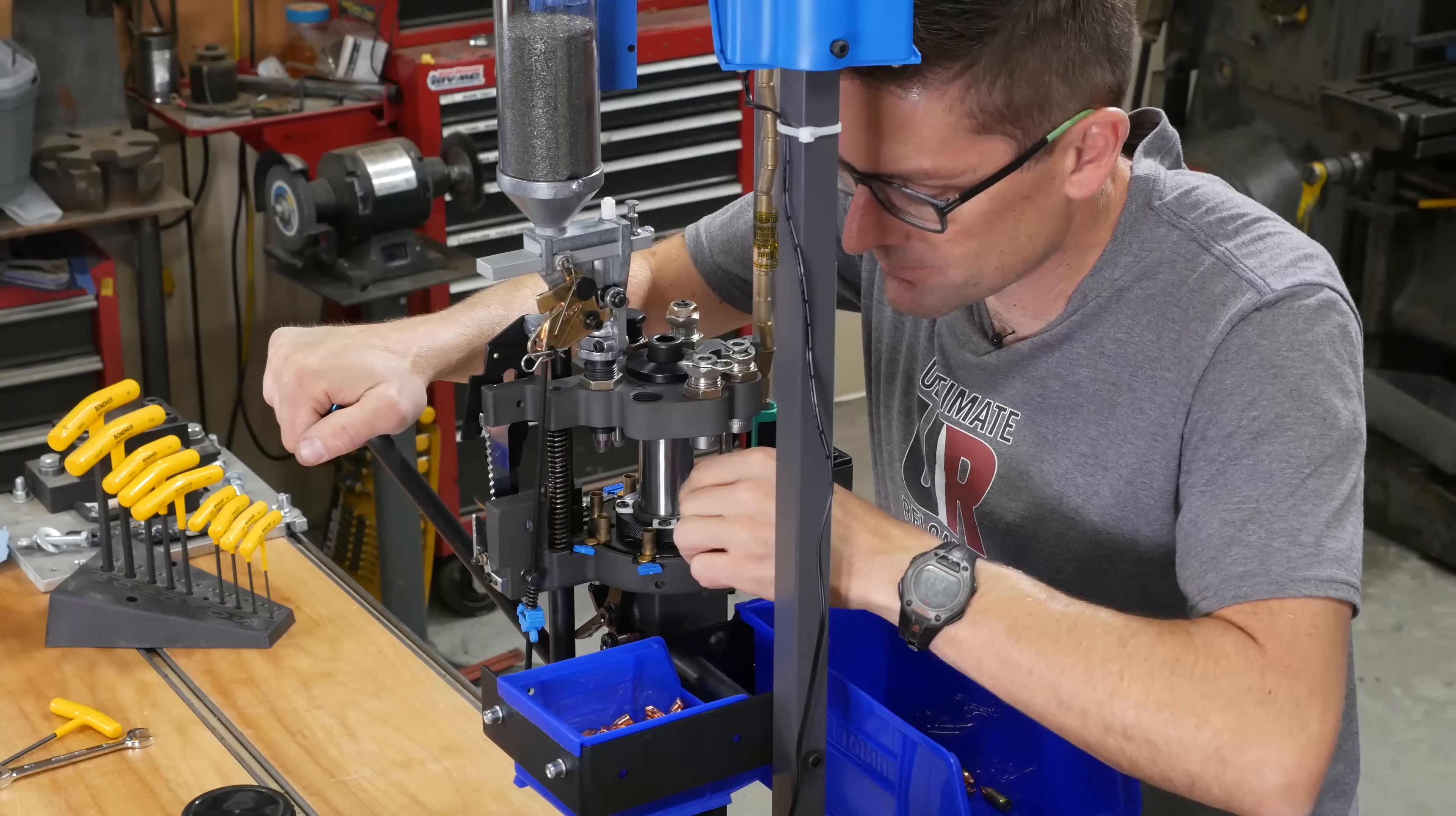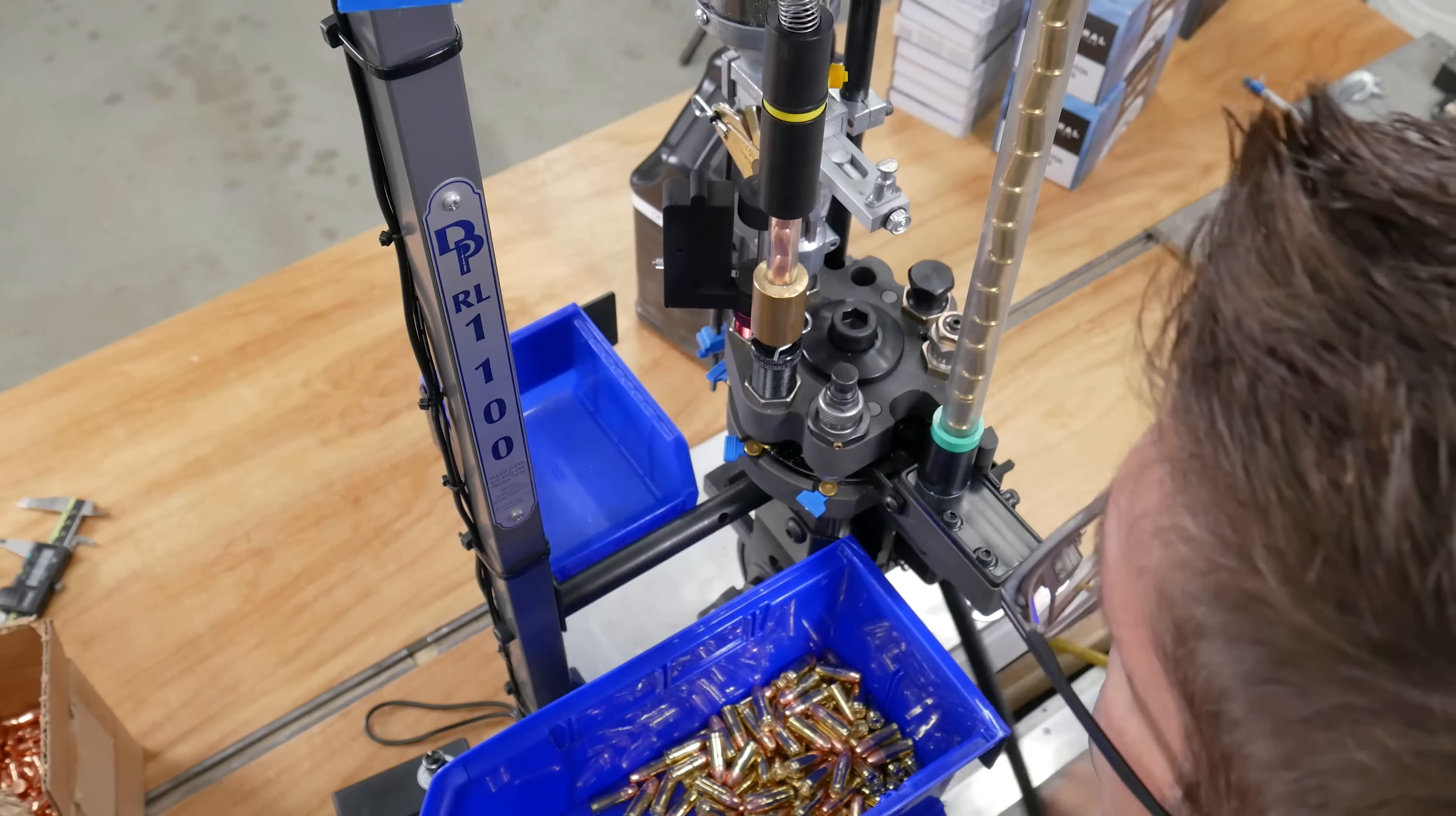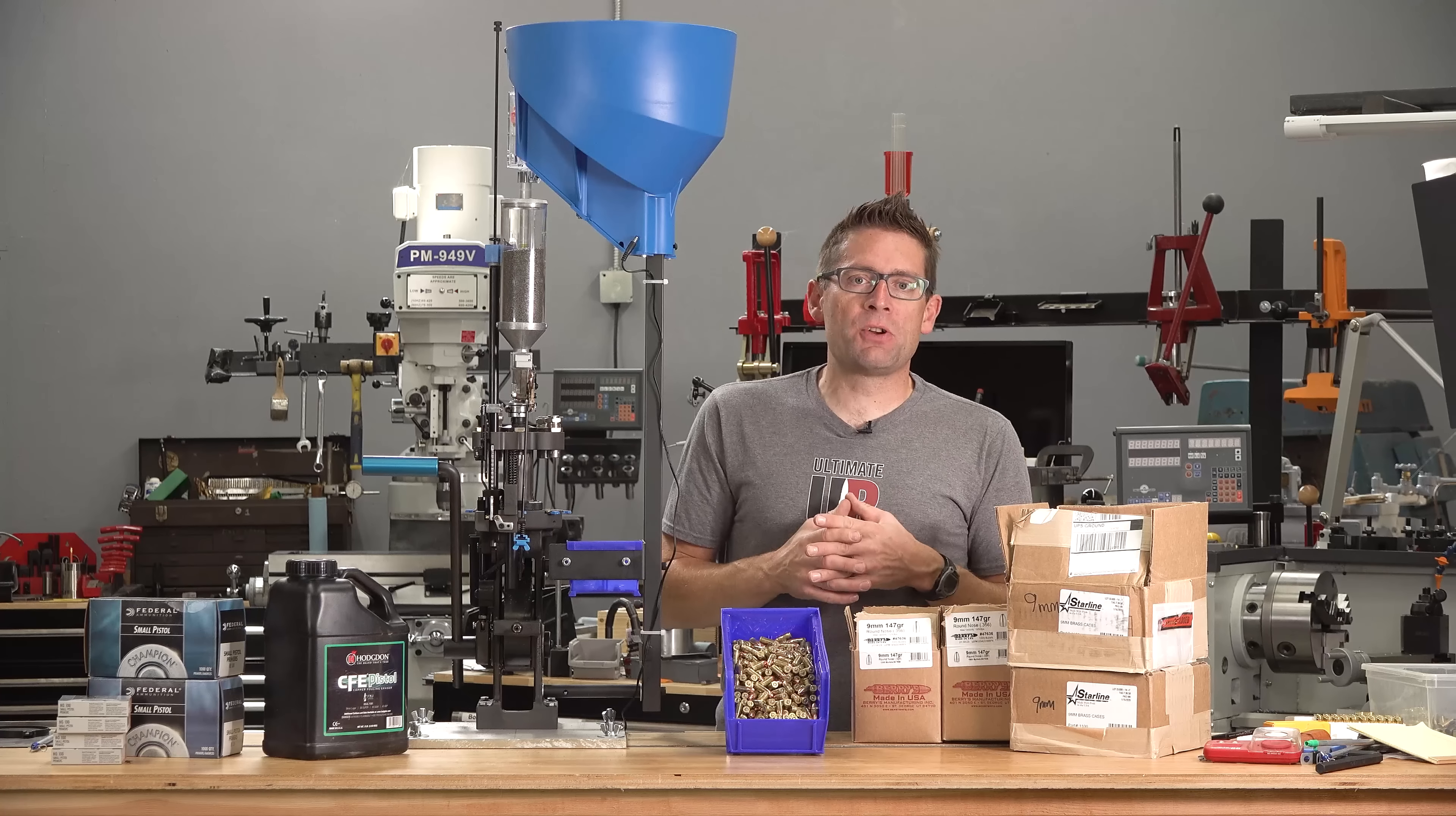My Dillon RL 1100 is cranking out the 9mm, and in this video we're going to bring it up to full tilt speed. Gavin here from UltimateReloader.com.